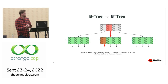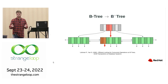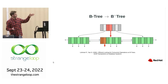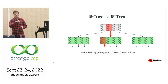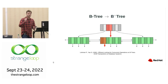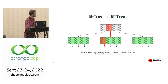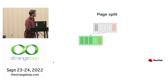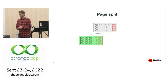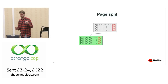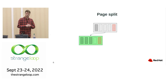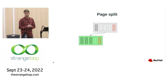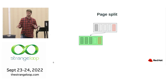Normal traversal goes from the root node: we pick up one search key, follow the pointer, find another search key, follow the pointer, and so on, until we find the particular data we're looking for. I already mentioned, in the context of link pointers and page splits — I have to describe that a little more because it's a very important topic.